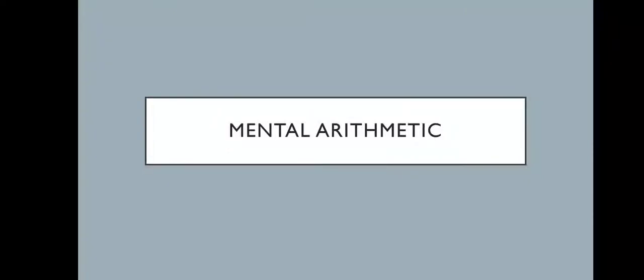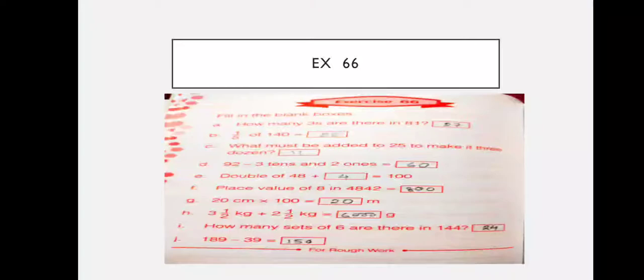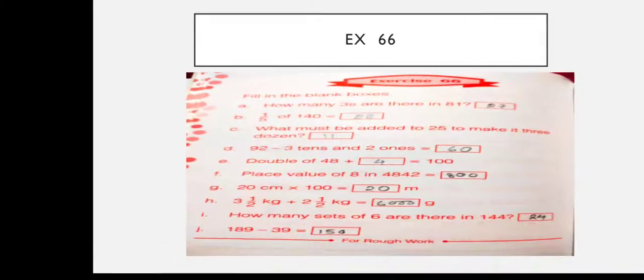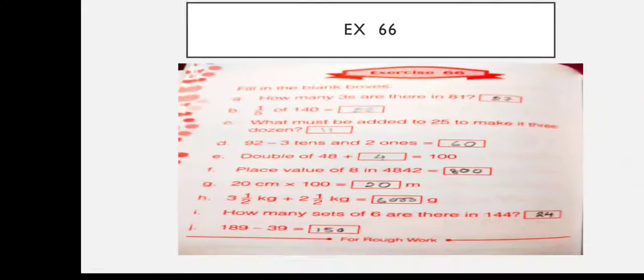Hello students, welcome to my class. Today we start our mental arithmetic class with exercise 66. First question: how many threes are there in 81? Here we do division — 81 divided by 3 is equal to 27.